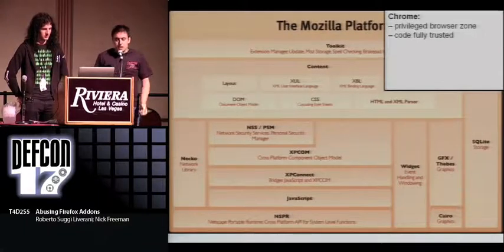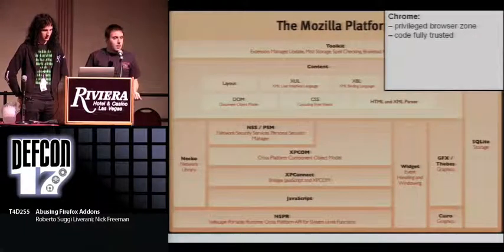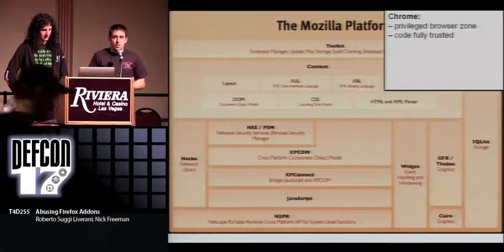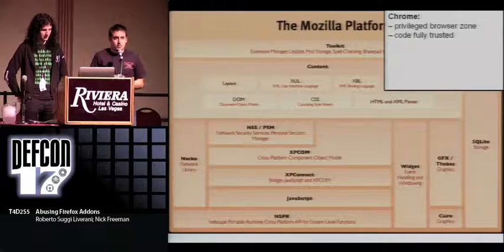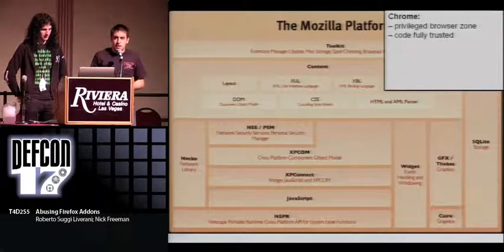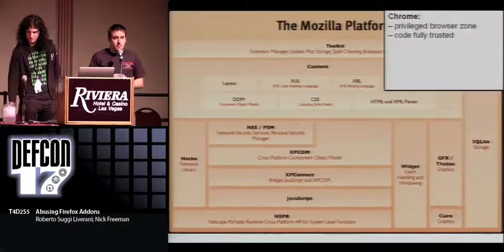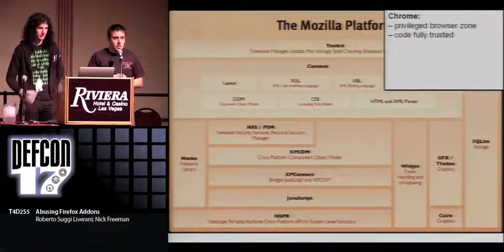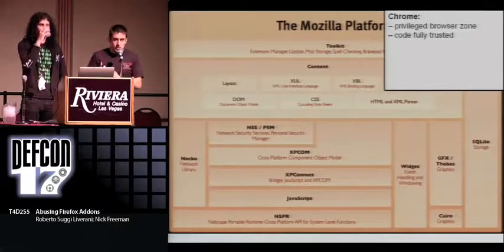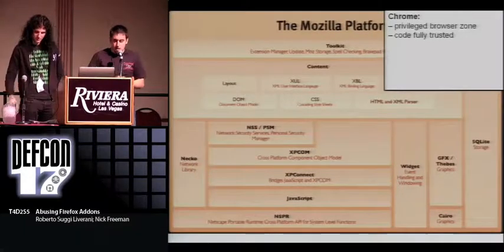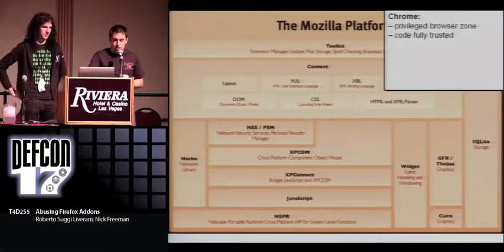Last but not least is Chrome — don't confuse with Google Chrome, it's something totally different. Chrome in Firefox is a privileged browser zone where the extension code runs, and it's fully trusted by Firefox. We will use this Chrome many times in this presentation, so just keep it in mind for now.